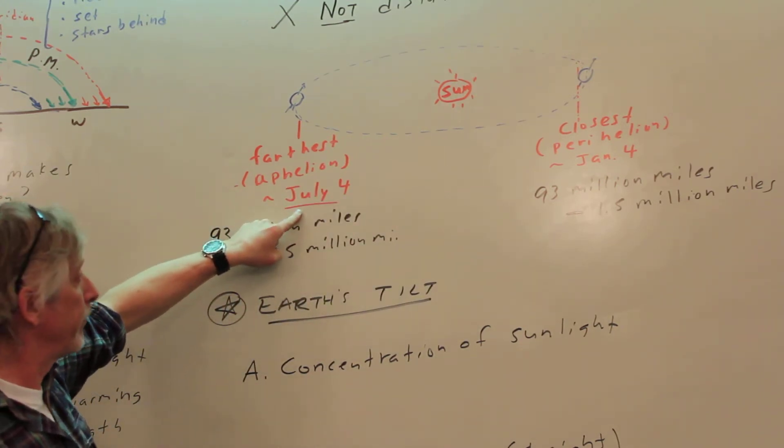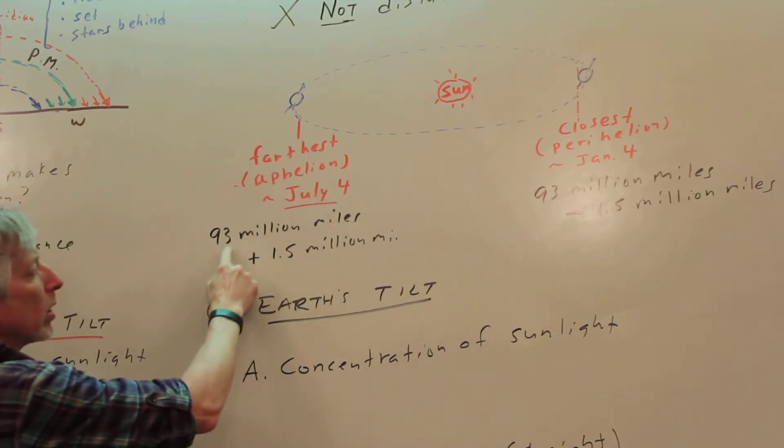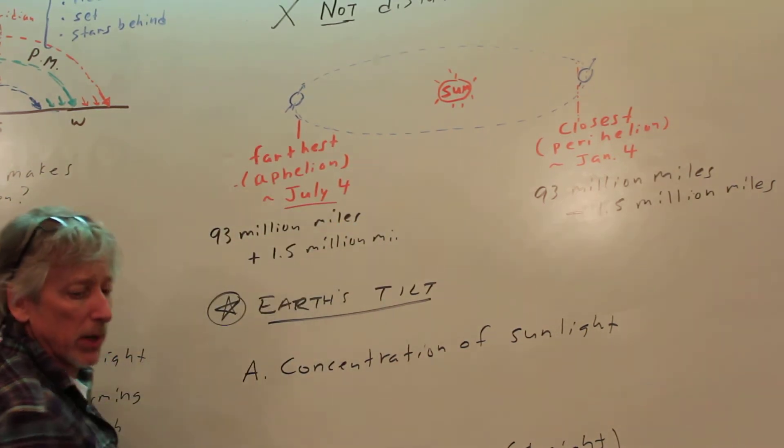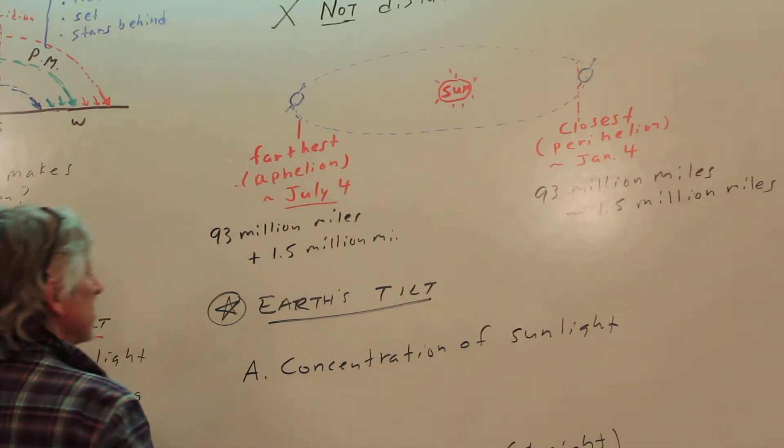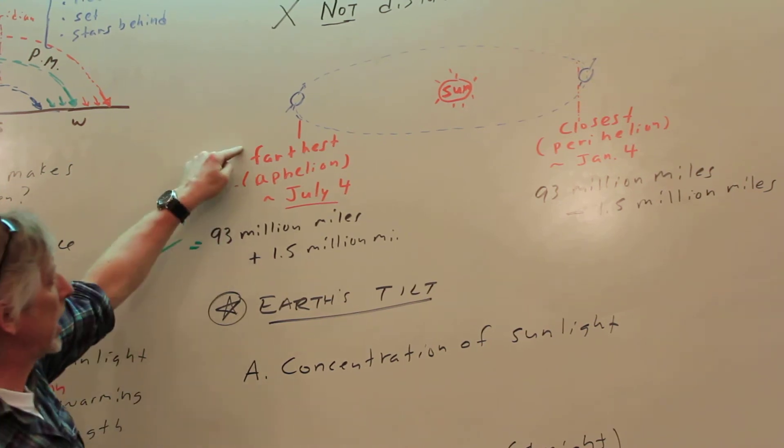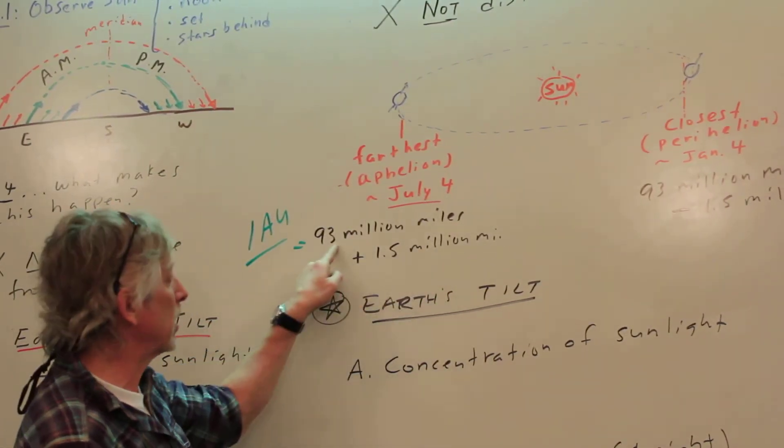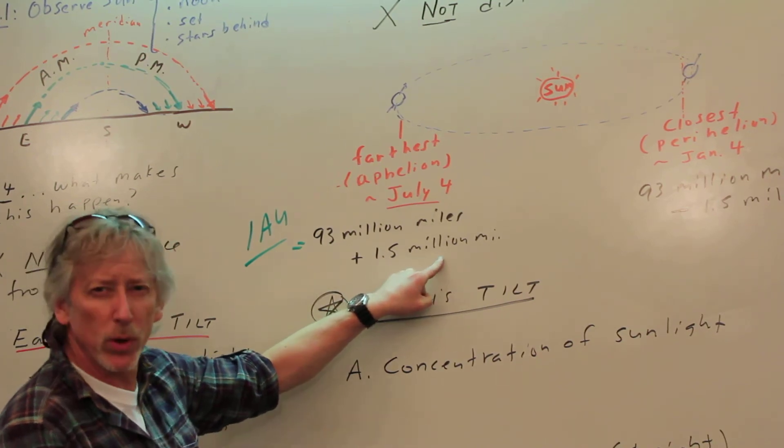So why isn't it the distance? Well, because we're on average, Earth is about 93 million miles away, and you know what that's called? One AU, one astronomical unit. And for this, we're just an extra 1.5 million miles compared to 93. That's a little more than 1%.